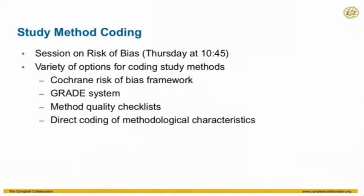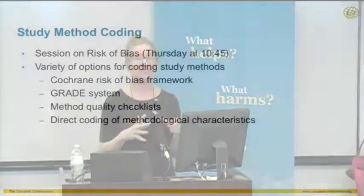Study method coding, or risk of bias coding — there's a session on Thursday about this. I think coding study methods is one of the hardest and most important parts of doing a systematic review, because study method makes a difference in outcomes. There's a large amount of research showing that effect sizes from RCTs look different from effect sizes from quasi-experimental designs — and the scary part is they don't always look bigger or smaller; it varies from literature to literature.